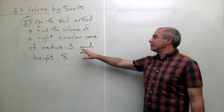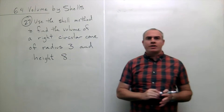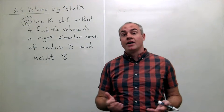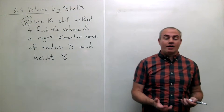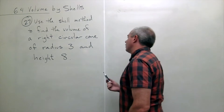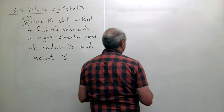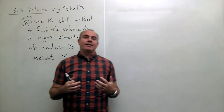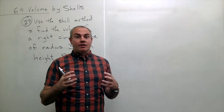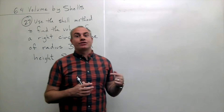We want to find the volume of a cone. We have formulas in geometry to do such things and we can certainly use those formulas to check our work at the end, but let's see how we would set this up using the shell method. I know I want a cone of radius three and height eight, so I have to think about what kind of shape I need to set up so that when I revolve it around one of the axes, I actually get a cone.